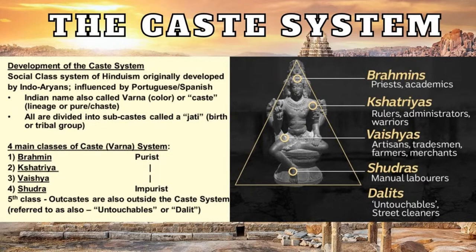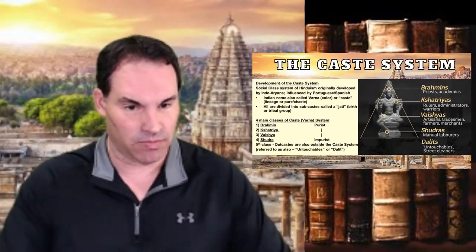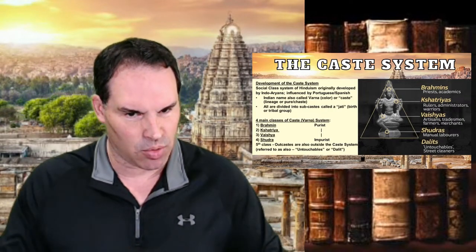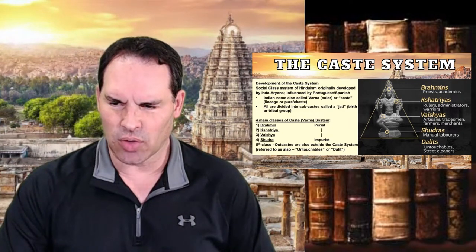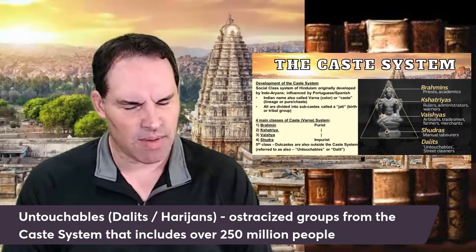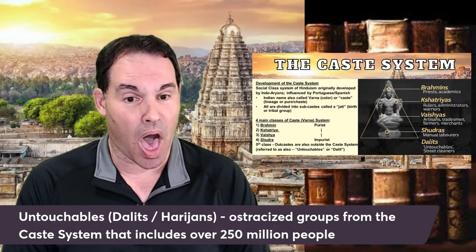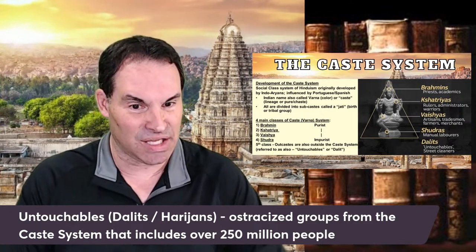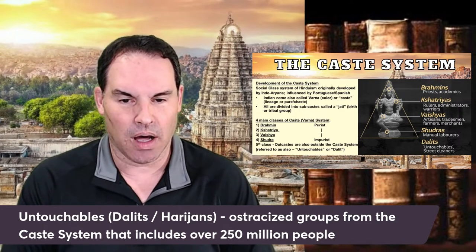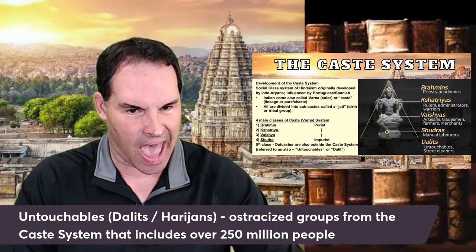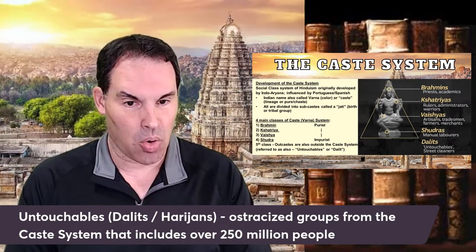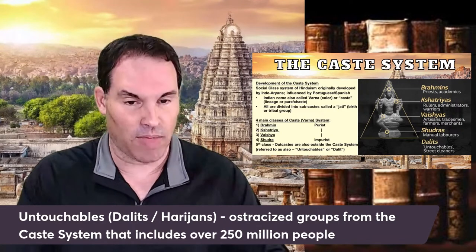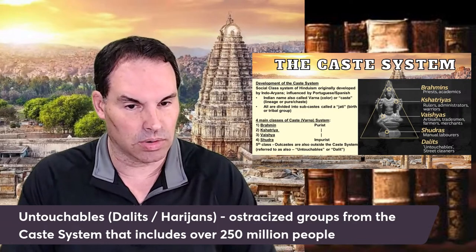You've also got the Dalits. Dalits are those not really in the caste — they're outside of the caste system, often called outcasts or untouchables in India. They also have another name: sometimes called 'Harijans,' which was supposedly a nickname Gandhi came up with, meaning 'children of God.' But now it's considered an offensive term. These are groups ostracized from the caste system, which may number over 250 million people in India alone, and also elsewhere throughout the world where Hinduism is practiced.